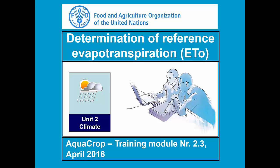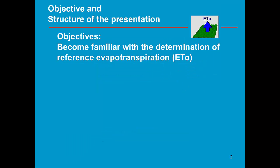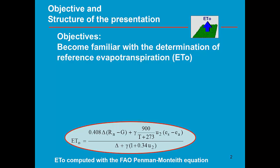Training Module 2.3: Determination of Reference Evapotranspiration. The learning objective of this presentation is to become familiar with the determination of ET0. ET0 can be computed from weather data with the FAO Penman-Monteith equation.